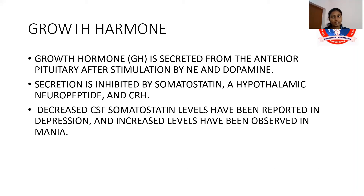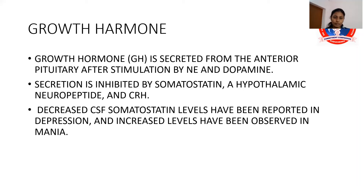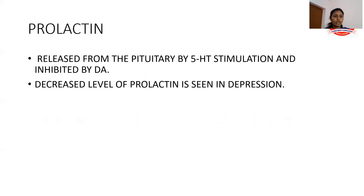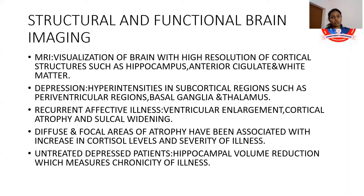Growth hormone is secreted from the anterior pituitary after stimulation by norepinephrine or epinephrine and dopamine. Secretion is inhibited by somatostatin — a hypothalamic neuropeptide — and cortisol-releasing hormone. Decreased CSF somatostatin levels have been reported in depression, and increased levels have been observed in mania. Prolactin is released from the pituitary by 5-HT stimulation and inhibited by dopamine; decreased levels of prolactin are seen in depression.